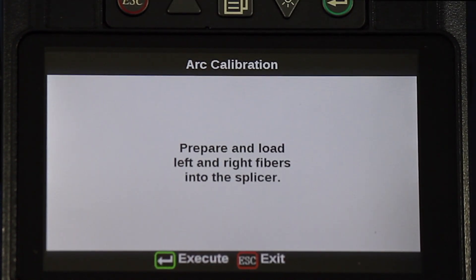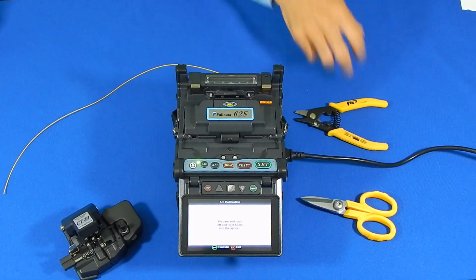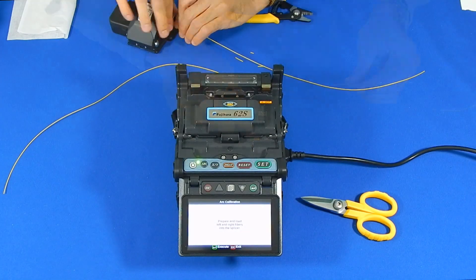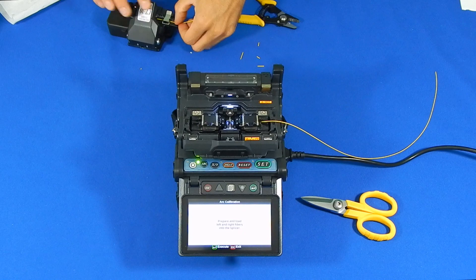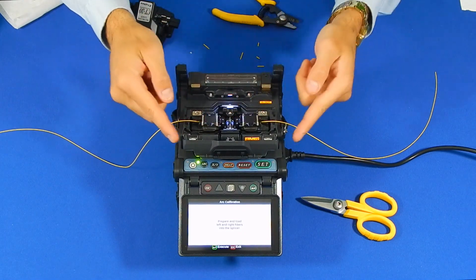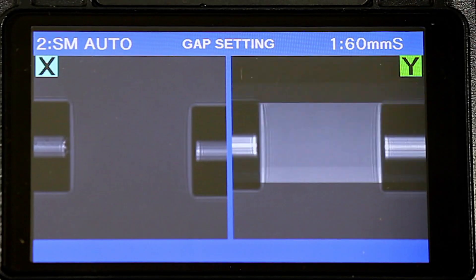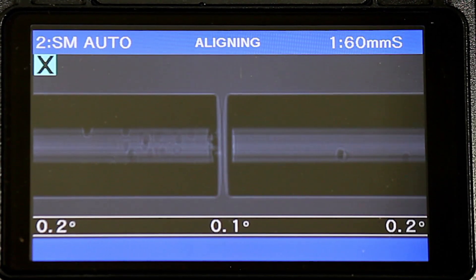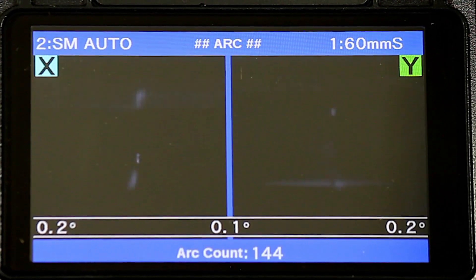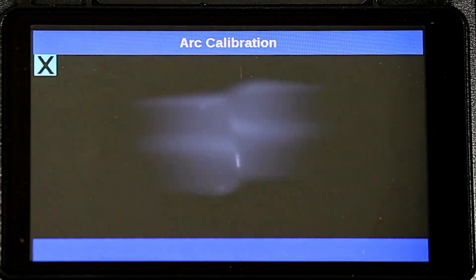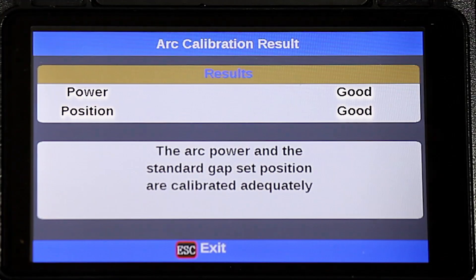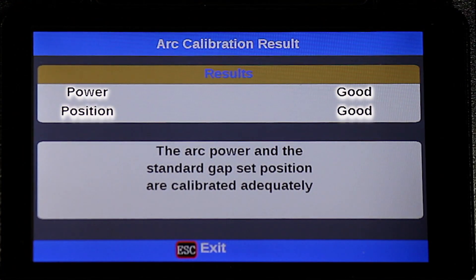Prepare and load left and right fibers into splicer. This must be done using single mode cable. When fibers are loaded, close the lid and begin the arc calibration. Once power and position is good, the machine is successfully calibrated.